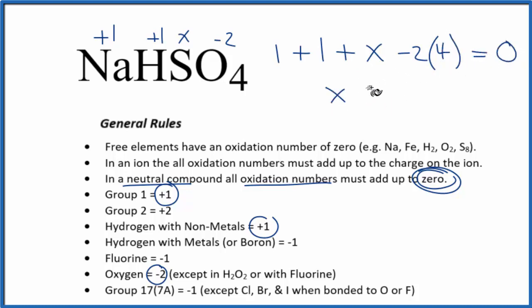So X plus, we have minus eight, plus two, so minus six. That equals zero. Add six to both sides, and we get X equals positive six.